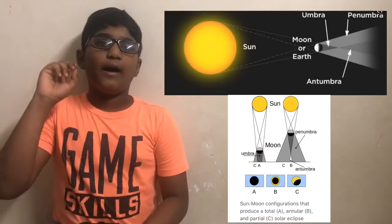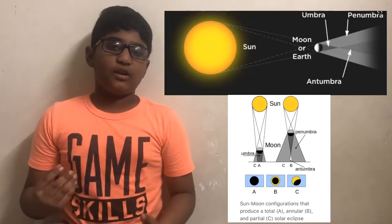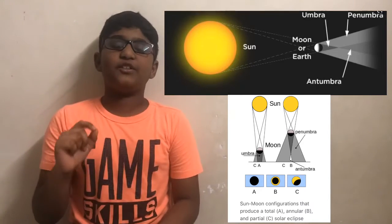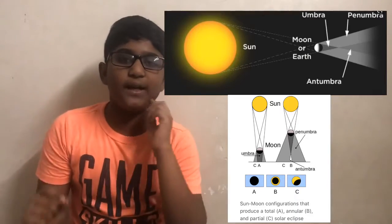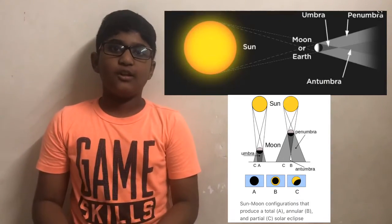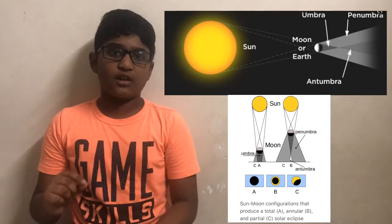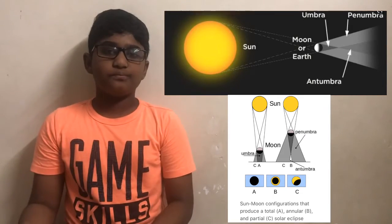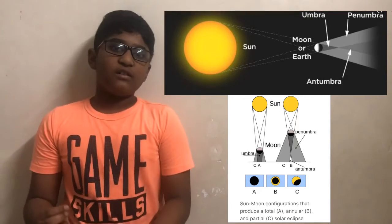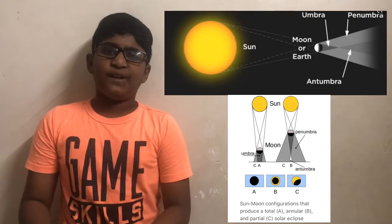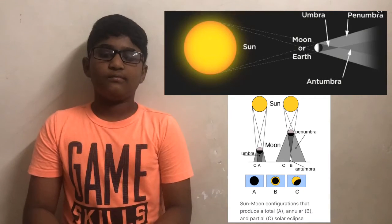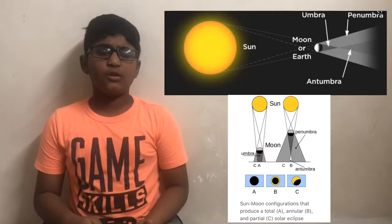Now, Antumbra. It is beyond the tip of the Umbra. The object will cover the light source but it is not big enough to cover the whole light source, so you can see a rim-like structure. This is when an annular eclipse occurs. Now, Penumbra. When the object is in the penumbra, we can see a little bit of the object's shade. This is called a partial eclipse.